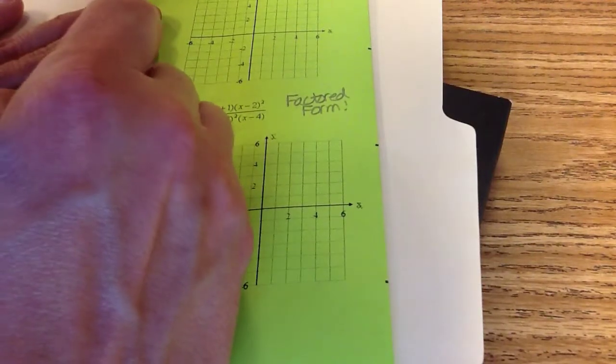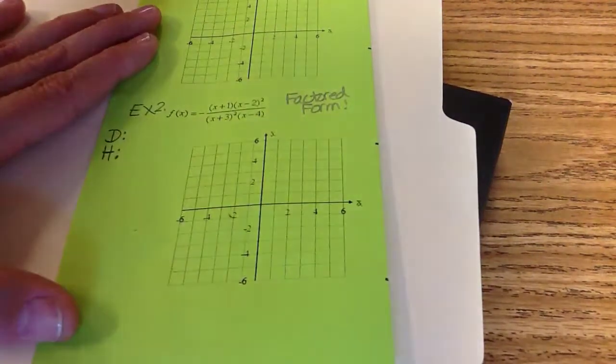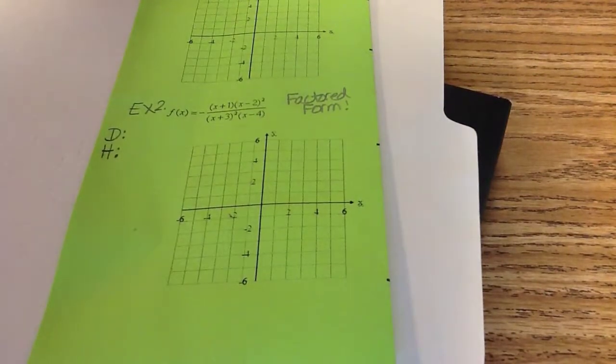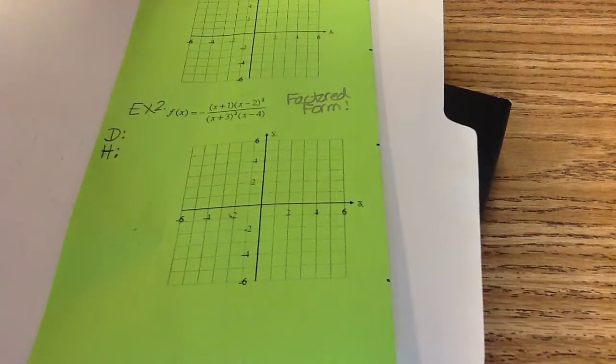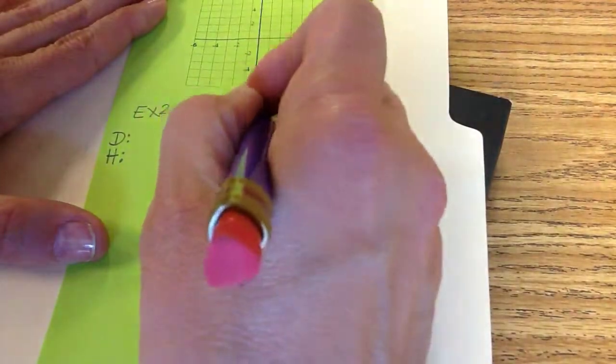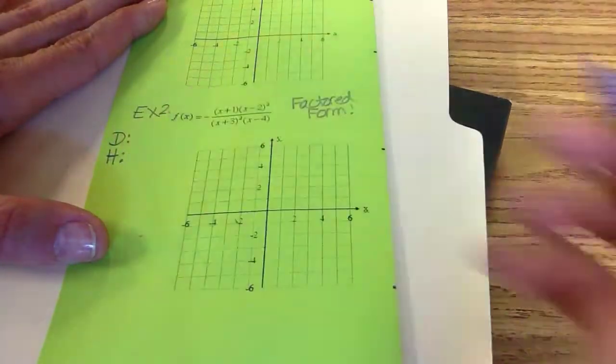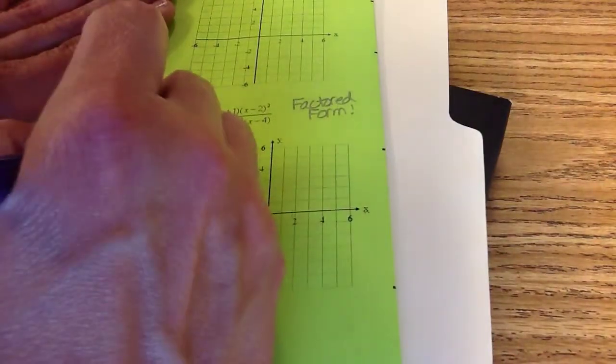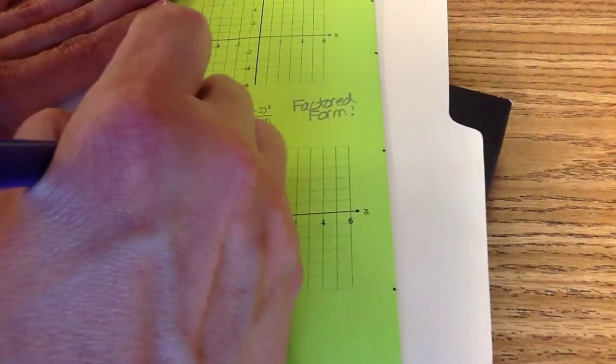So D, H. I'm just putting the D, I'll come back and do the D afterward. The H stands for holes. Holes happen when a common factor is divided out. Are there any common factors that can be divided out of this problem? No. So there are no holes. So we write none.